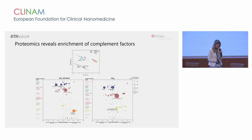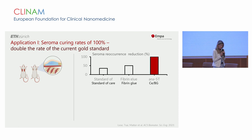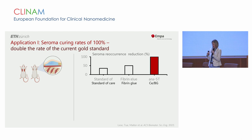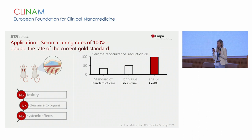We can also see a complement factor enrichment on the surface of these particles, which likely targets them very effectively to macrophages. To confirm this, we applied the nanoparticle-based suspension — or nano-glue — to a seroma model in a rat. Seroma is a cavity that forms when serous fluid leaks from a surgical wound, and it's a pretty painful condition. We applied the nanoparticle glue to glue together the seroma cavity and achieved really beautiful seroma incidence reduction — completely curing seromas with 100% efficiency, much more efficient than fibrin glue. We see no toxicity and no distribution of nanoparticles to other organs; particles really stay in place.